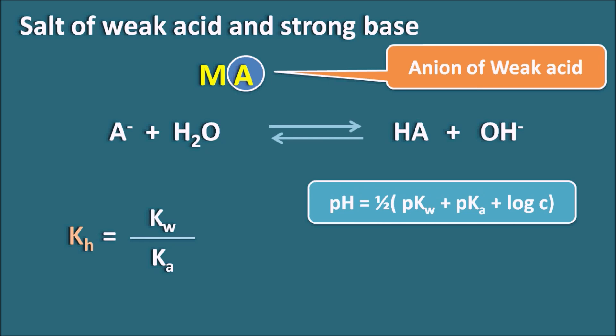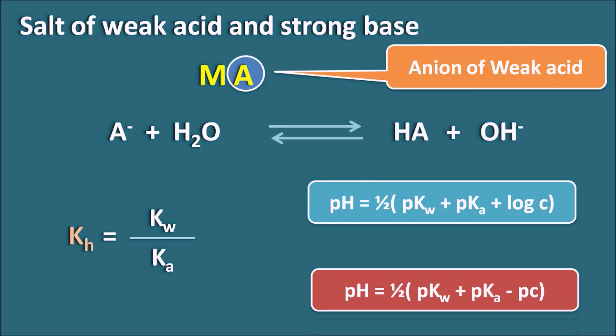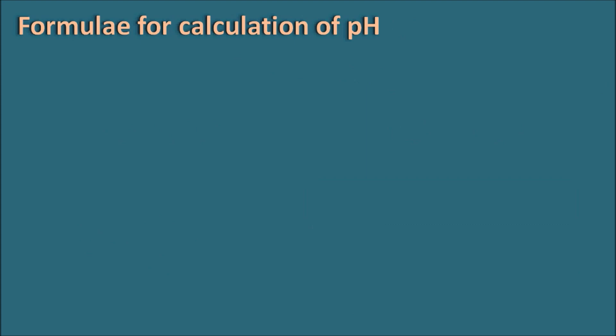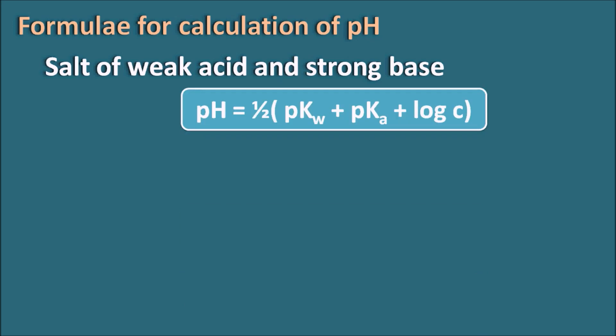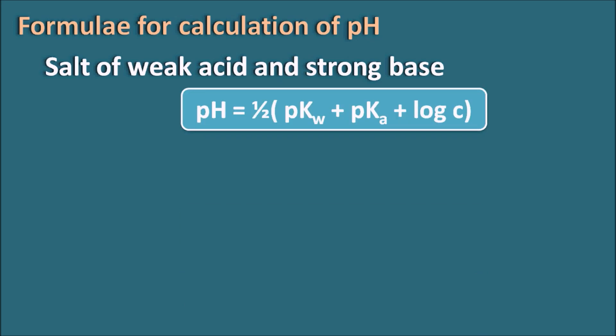This formula can also be written as pH = ½(pK_w + pK_a − pC), where pC is the negative logarithm of the concentration. Both forms can be used, but for easier remembrance, use the first formula: pH = ½(pK_w + pK_a + log c). So for a salt of weak acid and strong base: pH = ½(pK_w + pK_a + log c).